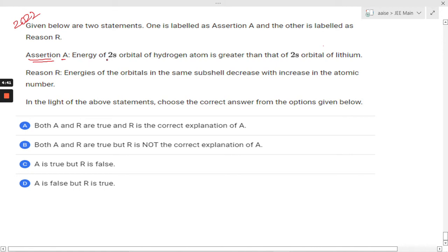that energy of 2s orbital of hydrogen atom is greater than that of 2s orbital of lithium. So from here we can see the electrons are in the same subshell or you can say in the same shell.